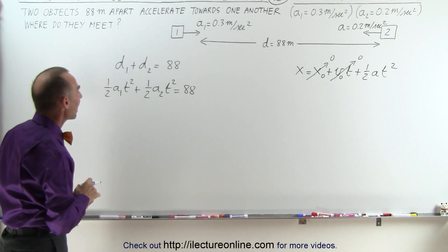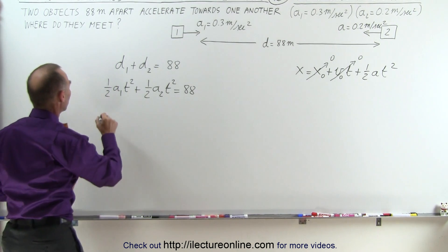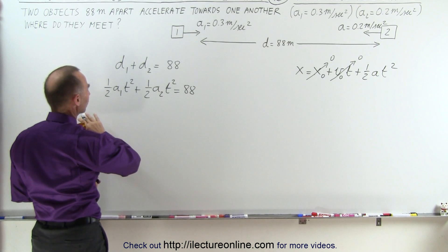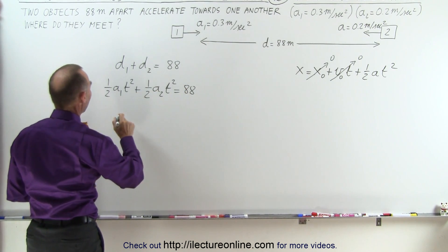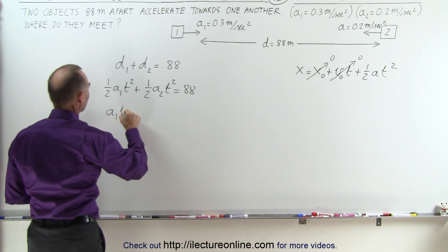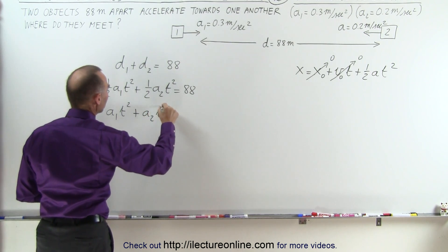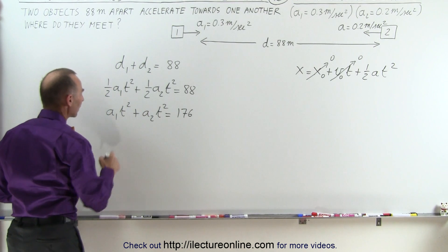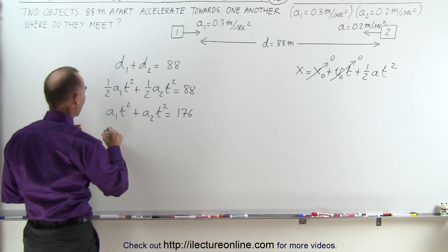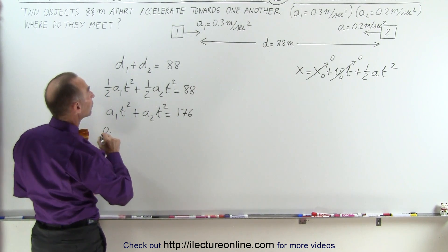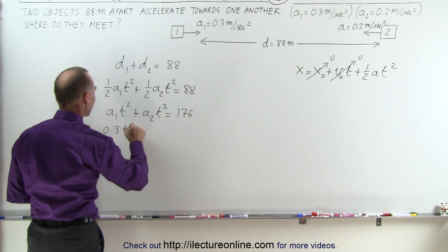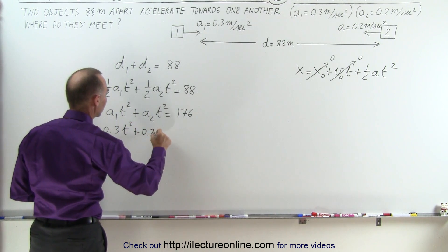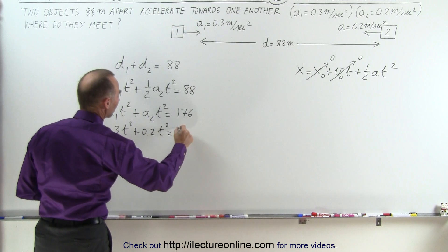Let's plug in what we have for a₁ and a₂. First I'm going to multiply everything by 2 to get rid of the one-halves, so a₁ t squared plus a₂ t squared equals double that, which would be 176. Now we plug in some values: 0.3 times t squared plus 0.2 t squared equals 176.